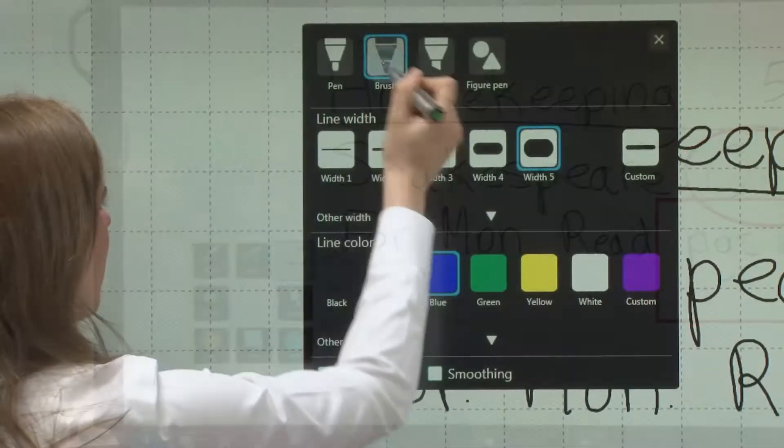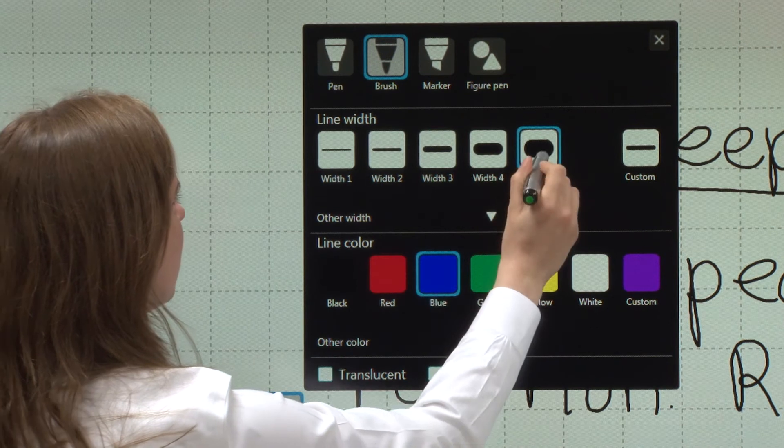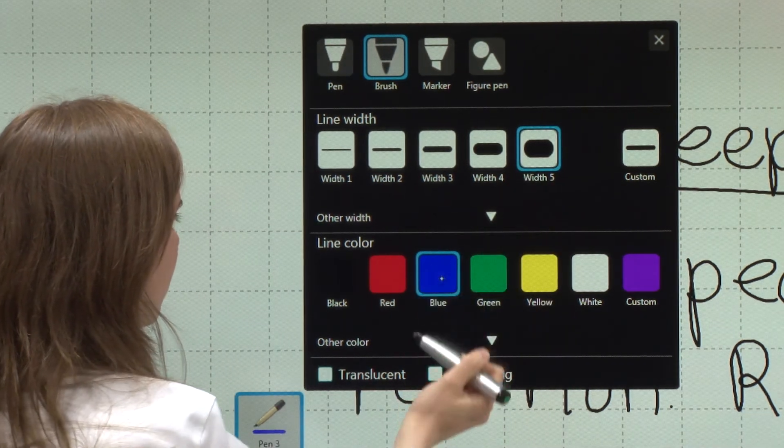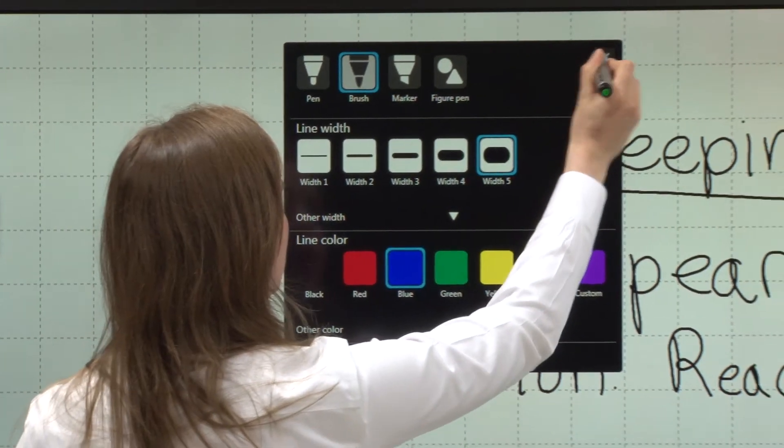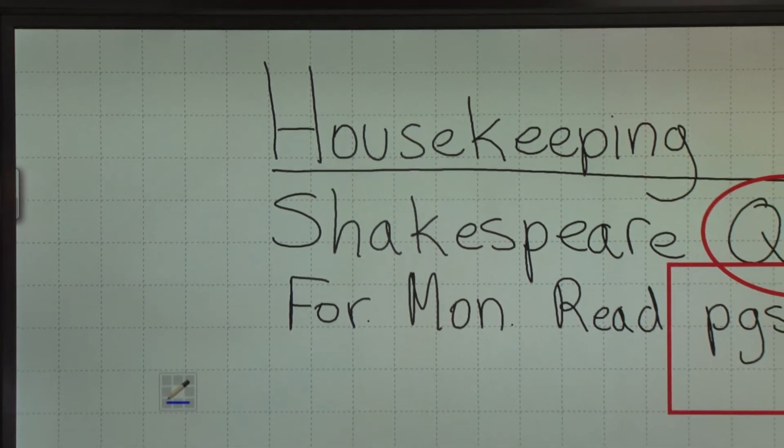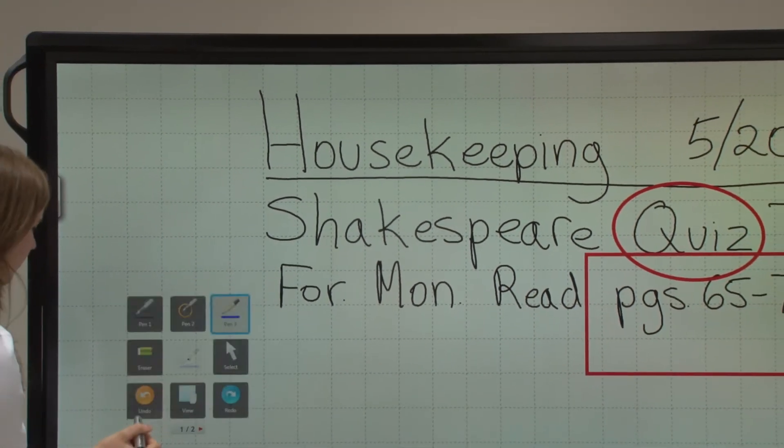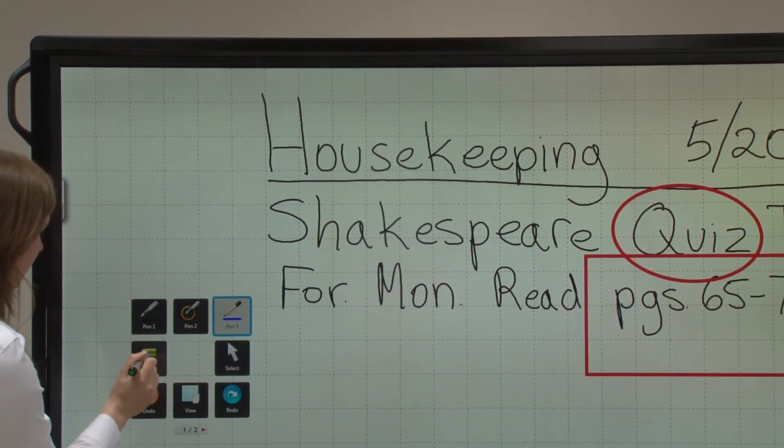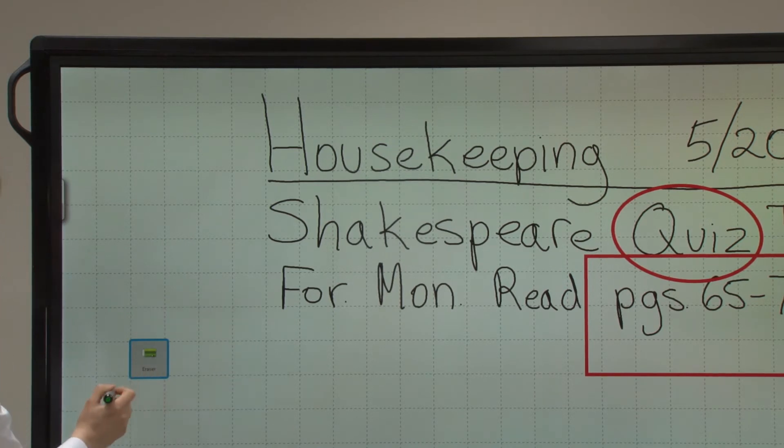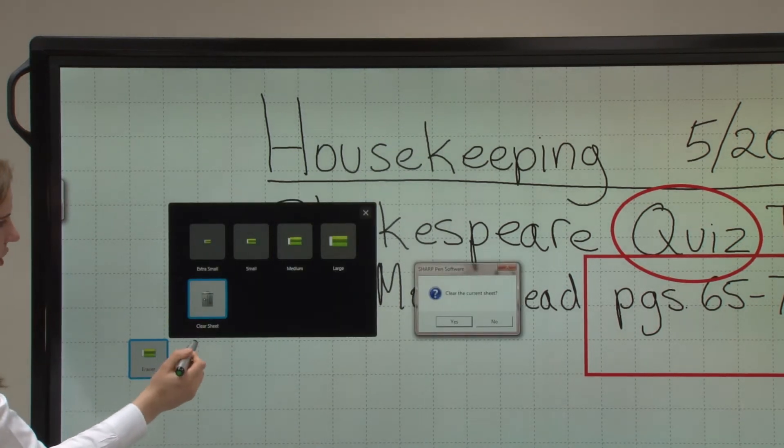Now we'll take the brush, which is the second icon here. A width of five. Blue. And what I want to show here, let's just quickly clear the entire screen. We'll tap eraser and clear our sheet.